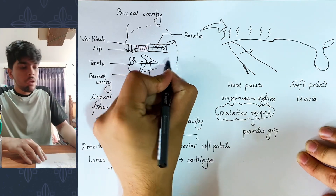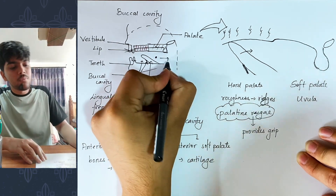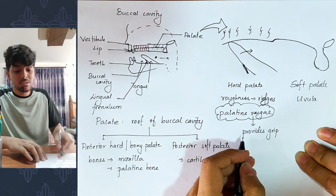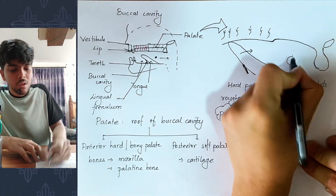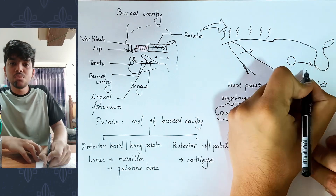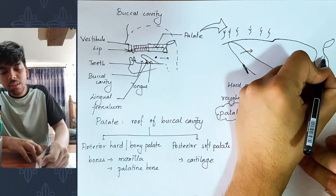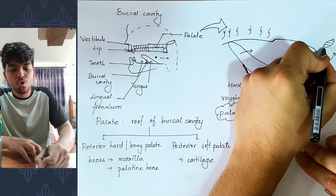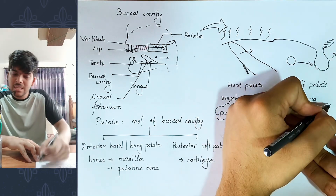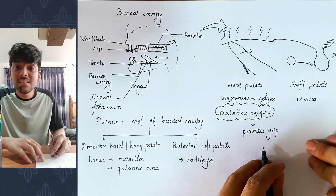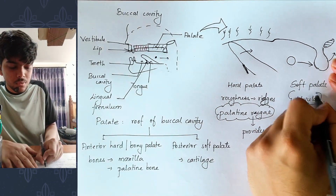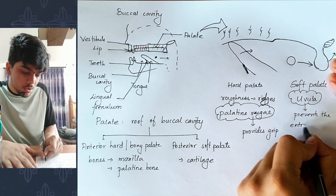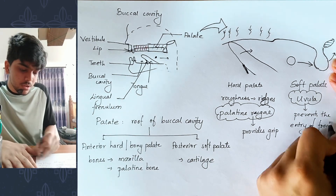When you are eating food, the uvula prevents food from going into the nasal cavity. When you swallow, the uvula bends and closes the internal nares, so that food does not enter the nasal chamber or nasal cavity.